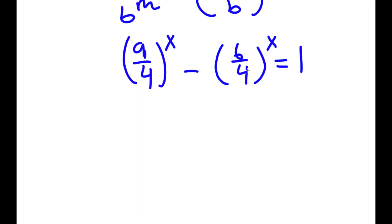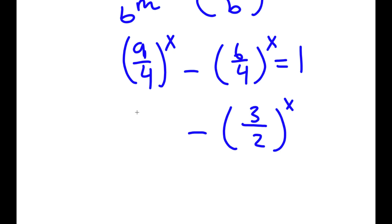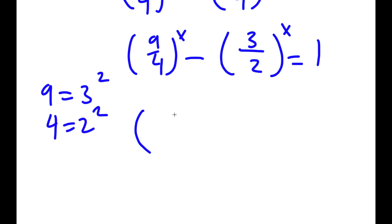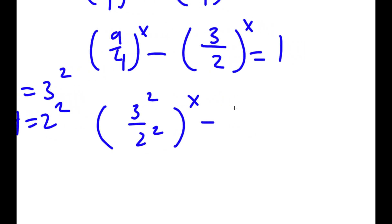Now, 6 over 4 — the greatest common factor of these two is 2. Since 2 times 3 is 6 and 2 times 2 is 4, so 6 over 4 simplifies to 3 over 2. And we still have 9 over 4 to the power of x. For 9 over 4, 9 is equal to 3 squared and 4 is equal to 2 squared. So I have 3 squared over 2 squared, to the power of x, minus 3 over 2 to the power of x, is equal to 1.